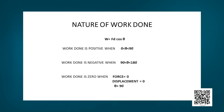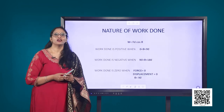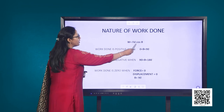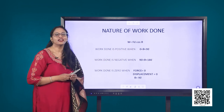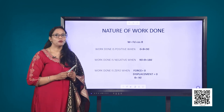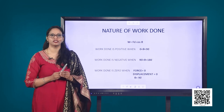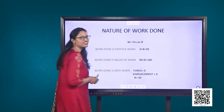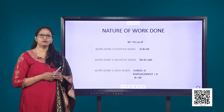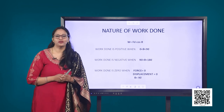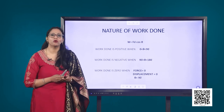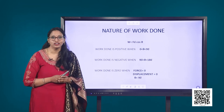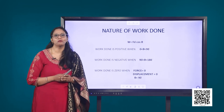Let us try to understand the nature of work done. We know that work done is represented by W equals F D cos theta. Work done is positive when the value of cos theta is positive, that is when theta lies between 0 and 90 degrees. For example, a car engine driving the vehicle forward certainly would do positive work on it. The work done by the force of gravity on a freely falling object will also be positive.